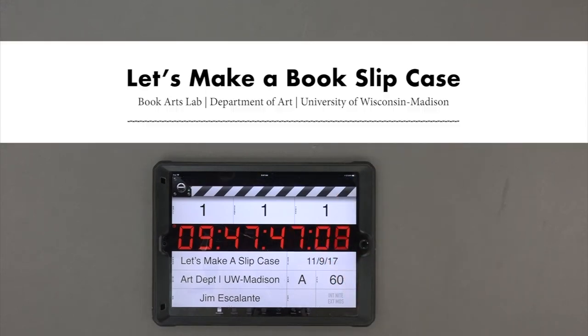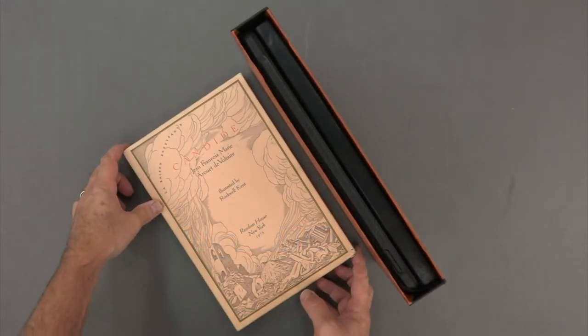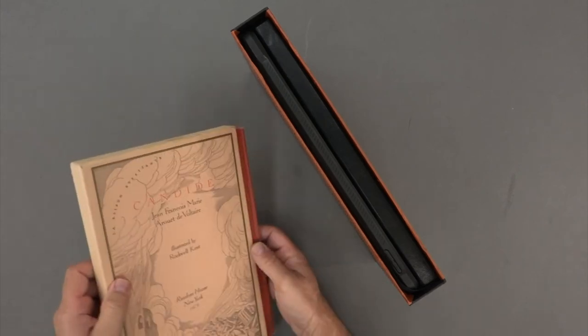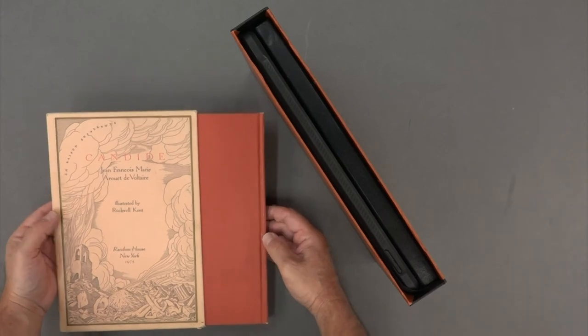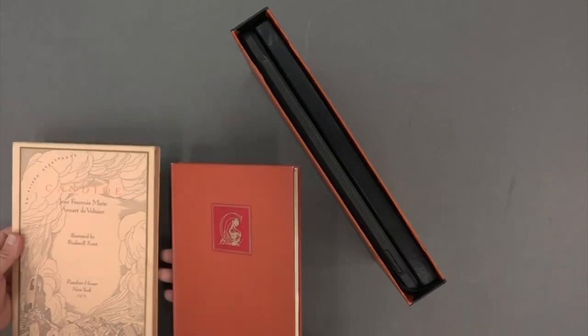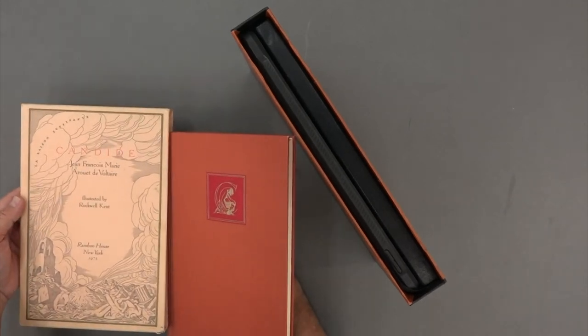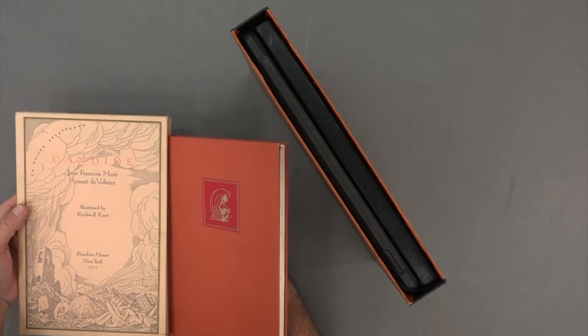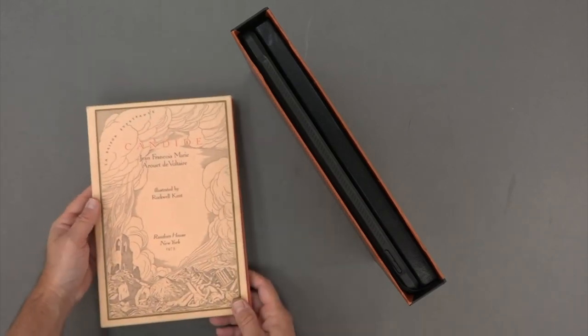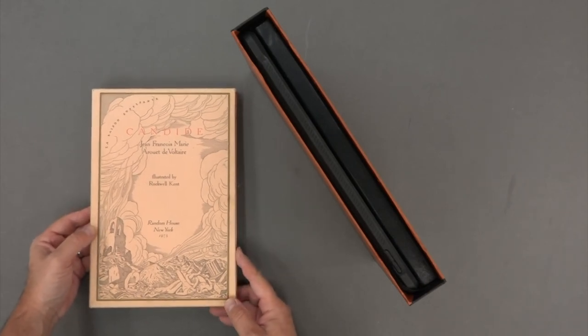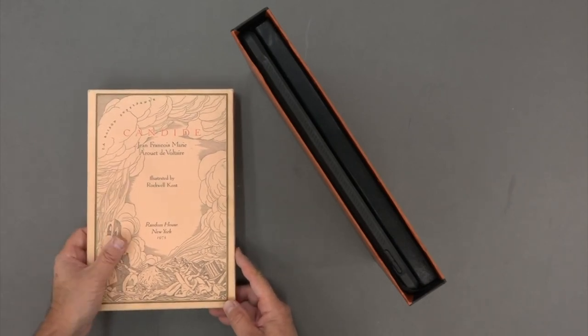Let's make a slip case. The slip case is a common device used to protect books. In this case, this slip case accompanied a very elegant edition that was printed in 1975.